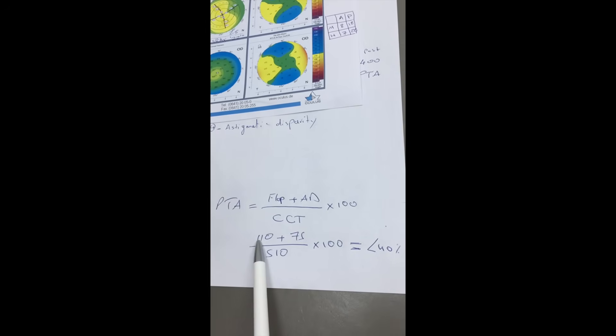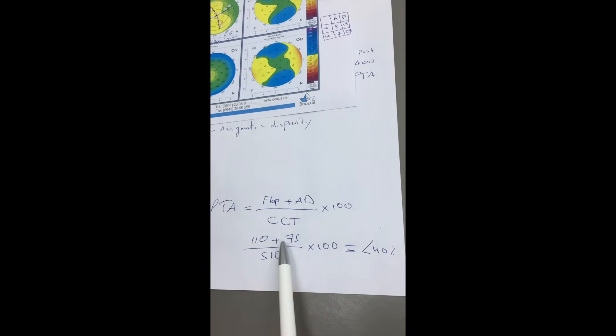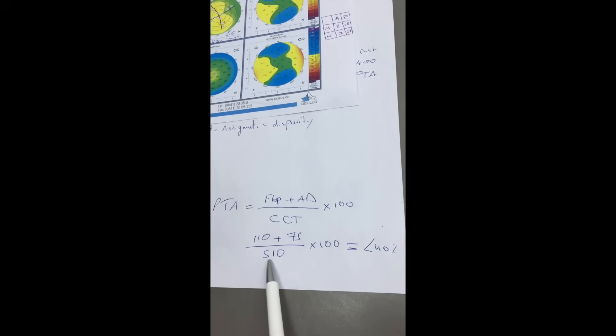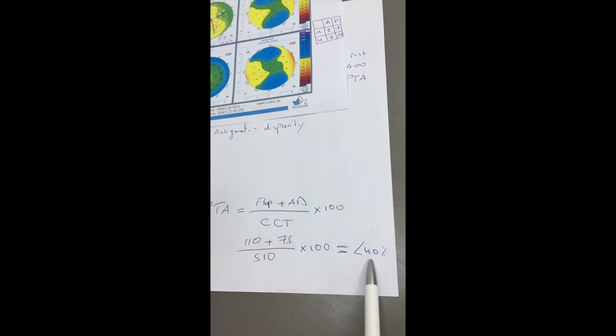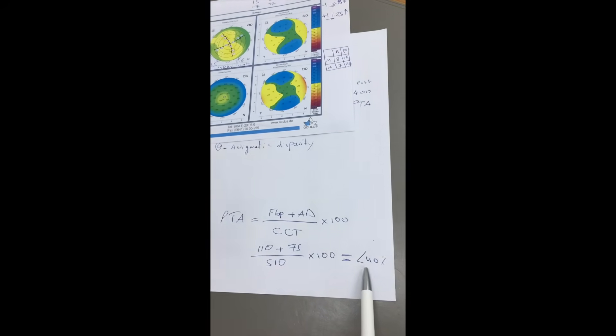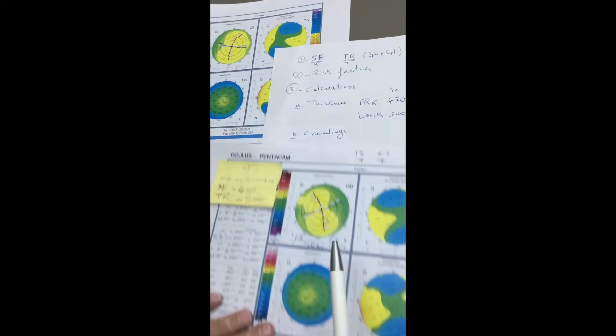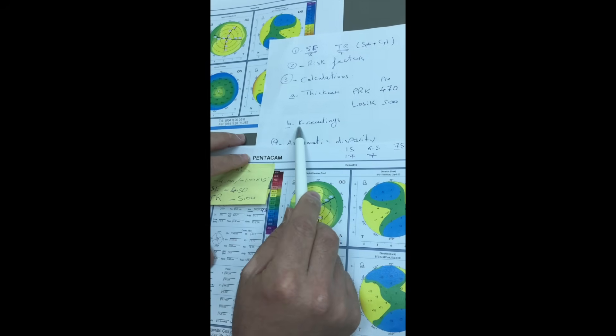110 flap thickness and the ablation depth is 75 and the central corneal thickness is 510. Then as you see, the percentage is less than 40%. The cutoff point is 40%. So in this case, we can go for LASIK as well. However, we have to move to the other calculation, which is the K reading.